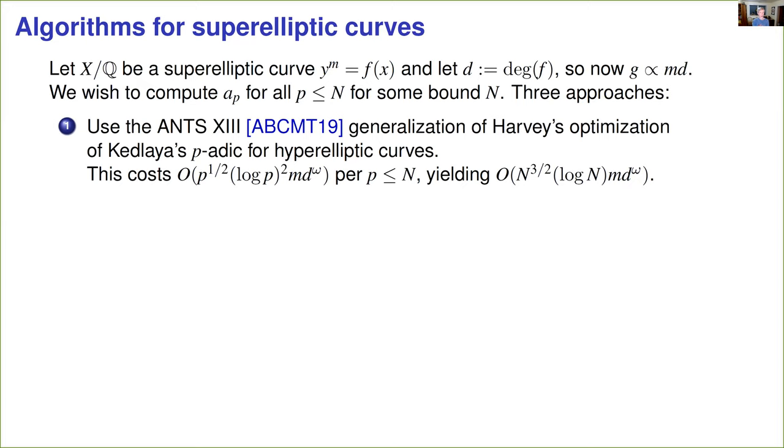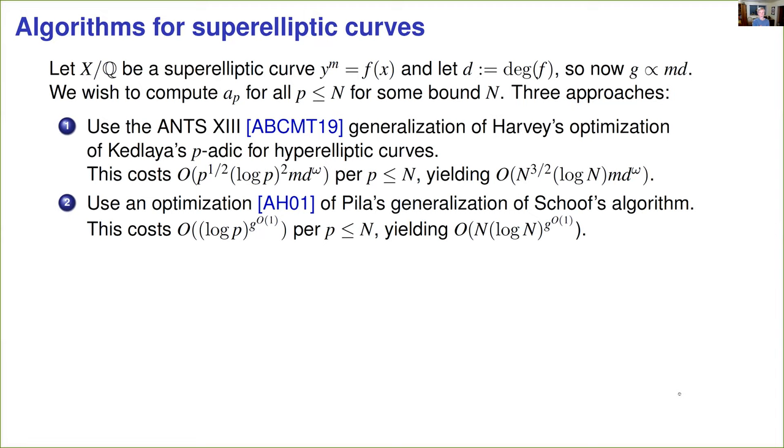Now you might say, if we're looking for an average polynomial time algorithm, why not actually use a polynomial time algorithm? There are at least theoretical algorithms that can compute not just the aps, but the full zeta function of any curve over a finite field in time that's polynomial in log p. And so the most efficient approach that's known in the case of superelliptic curves is an algorithm due to Adleman and Huang, which appeared in ANTS-1, which is an optimization of Pila's generalization of Schoof's algorithm for elliptic curves. And this gives a running time that is polynomial in log p, but the exponent in that polynomial grows rapidly with g. And even for g = 3, the exponent is already too large for this to be practical within the feasible range of n.